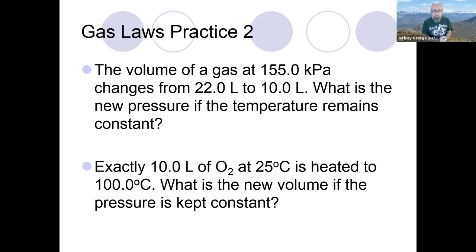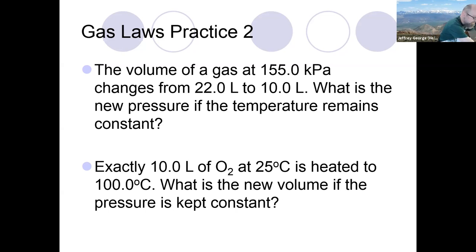So we're going to do these two practice problems. The first one says the volume of a gas at 155 kilopascals — so that's the pressure of the gas — and the volume changes from 22 liters, which is the initial volume, to 10 liters, which is the final volume. So our initial pressure is 155 kilopascals, our initial volume is 22 liters, and the final volume is 10 liters, which means we're looking for our final pressure P2. Let me bring up the whiteboard camera.